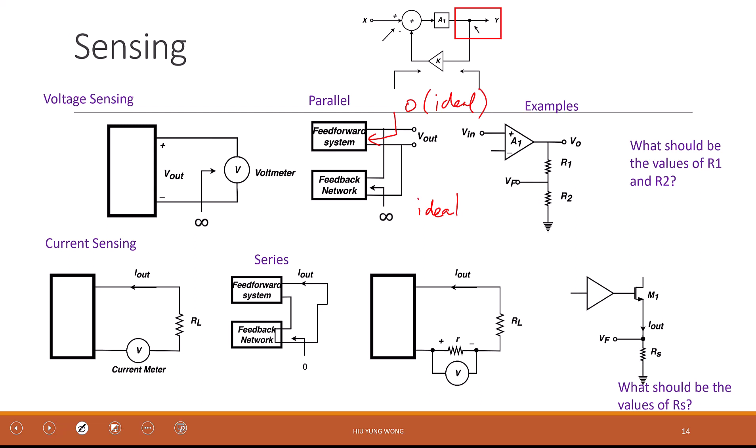It's Vf and Vo, but which one divided by which one? Very good. So k equals Vf divided by Vout. What is Vf divided by Vout in this case?